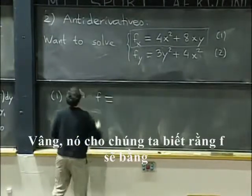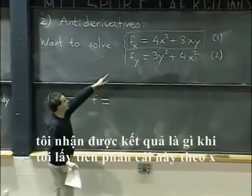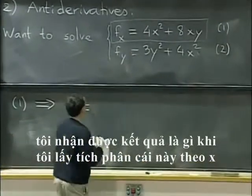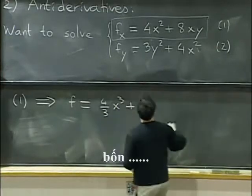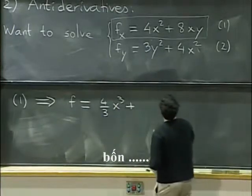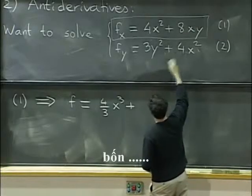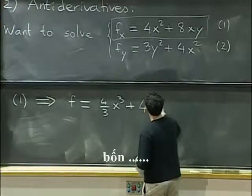Well, it tells us that f should be, OK, so what do I get when I integrate this with respect to x? I get 4 thirds x cubed plus, when I integrate 8xy, y is just a constant. So I will get 4x squared y.